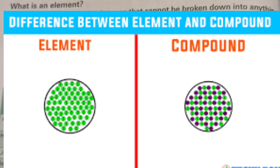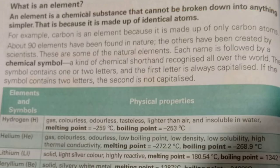In one element, there are many atoms of the same kind. A compound has two types of atoms. For example, carbon is an element because it is made up of only carbon atoms.